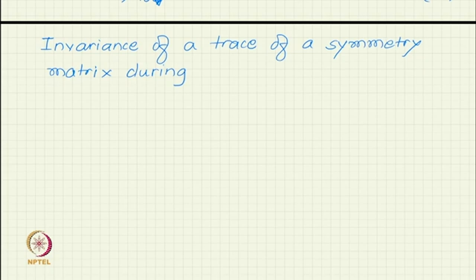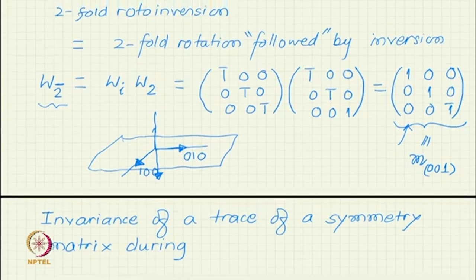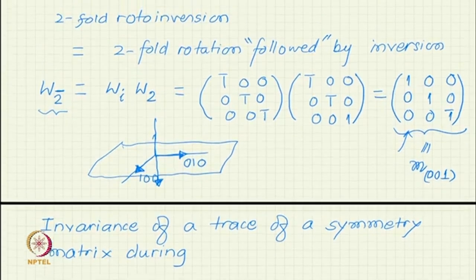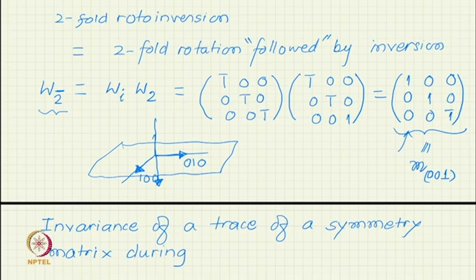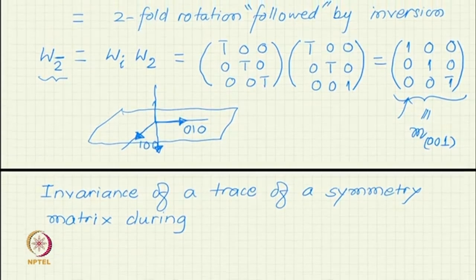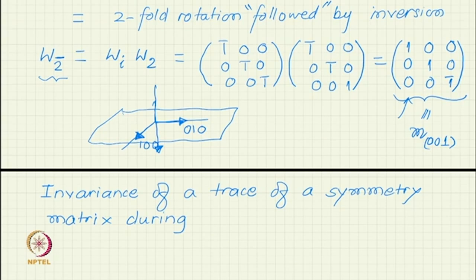Now, let us look at the invariance of the trace. Hardly any complicated matrix comes in what you are seeing for twofold rotoinversions. These are the kind of matrices which comes in crystallography. Most of the symmetry operations will be represented by simple combinations of 0, 1, sometimes maybe a fraction like half or 2, but beyond that it will not be complicated numbers which you have to handle. As such, matrix algebra is not complicated, only the interpretation is important.